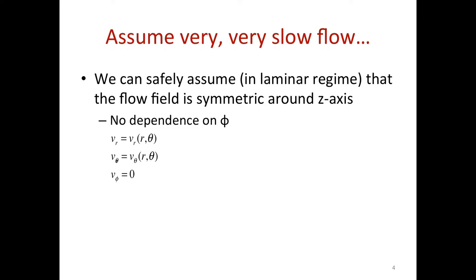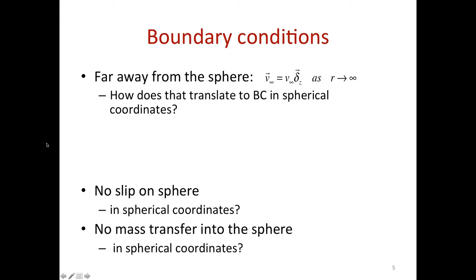Let's look at the boundary conditions. One boundary condition is v-infinity in the z-direction, except z-direction doesn't exist in our r-theta-phi system, so I need to translate it. The boundary condition far away from the sphere is that v approaches v-infinity times delta-z as r tends to infinity. How does that translate into spherical coordinates?